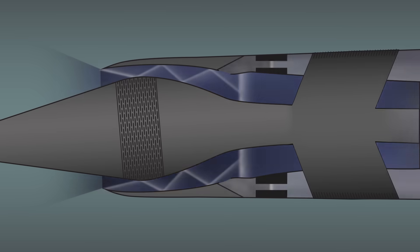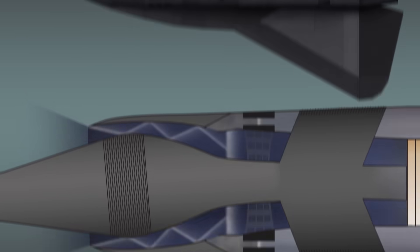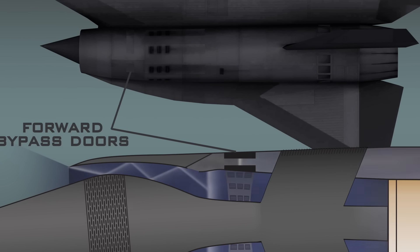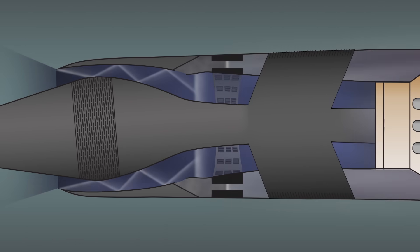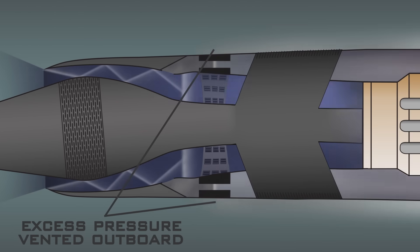Inside the inlet is a series of slots that run between the shock tubes that lead directly out of the plane. These are the forward bypass doors, which allow an analog computer to lower the pressure inside the diffuser by sending some of it outside the aircraft.